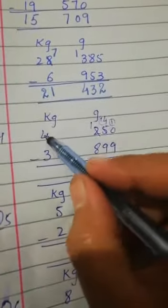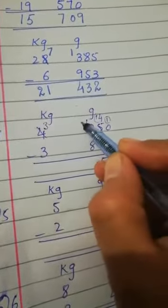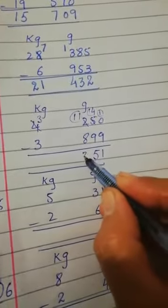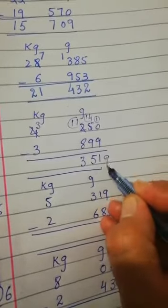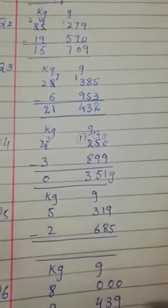Ab idhar one hai. Yahaan se hum four se leenge. Toh three raha jayega. Yeh eleven ban jayega. Eleven me se hum eight minus karenge. Toh three. Three fifty one gram. Three me se three. Nothing yanke zero. Ab uske paas tomato kitne bache hain? Three fifty one gram.